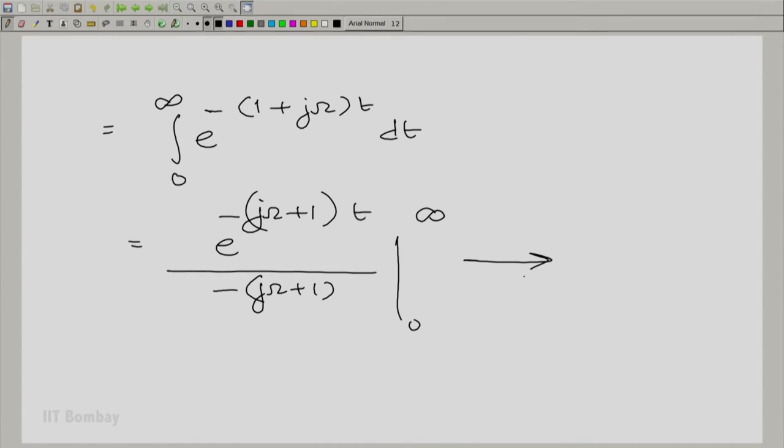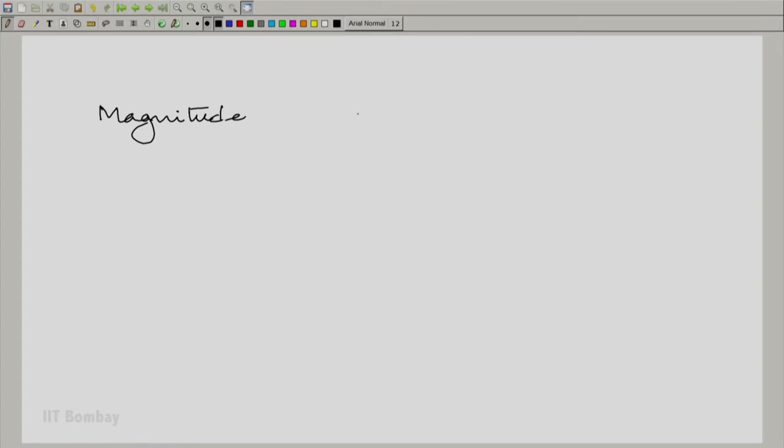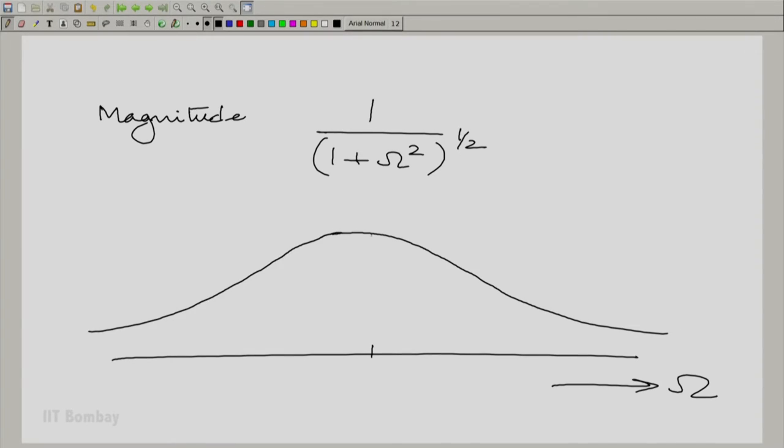This goes to 1/(1+jω), very easy. Simple and elegant Fourier transform. Let us sketch this. The magnitude is 1/√(1+ω²), and that can be sketched like this: symmetric about 0 and monotonically decaying on either side.